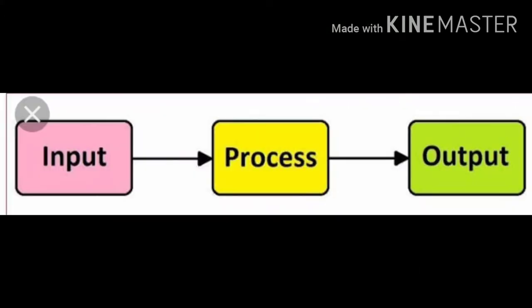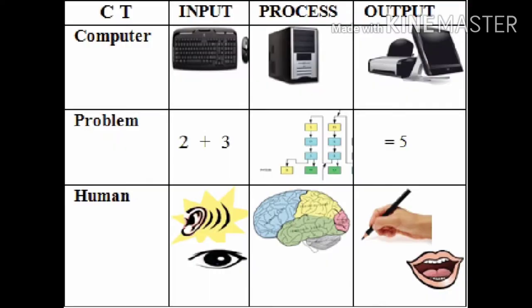A computer follows three simple steps: input, processing, and output. The working of a computer system is very much similar to the working of a human being. A computer's brain works like a processor, taking instructions as input through senses like ears or eyes, and producing the desired result as output through the mouth.